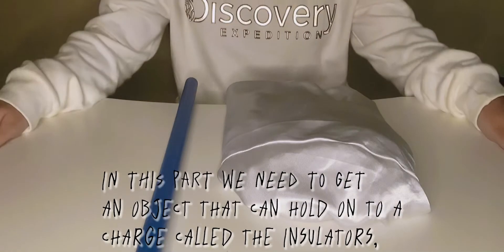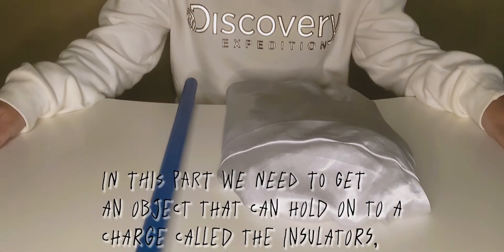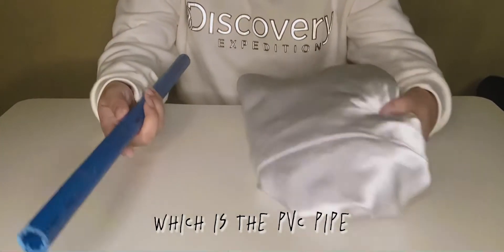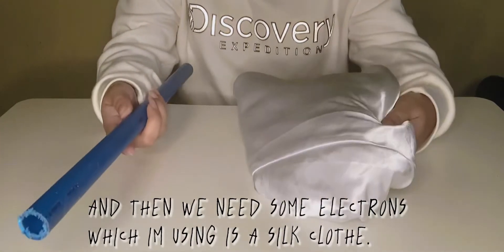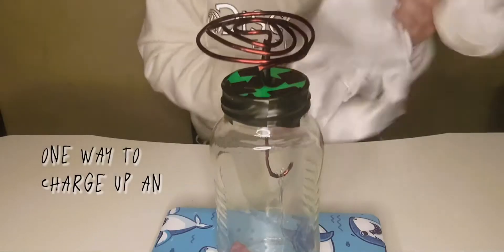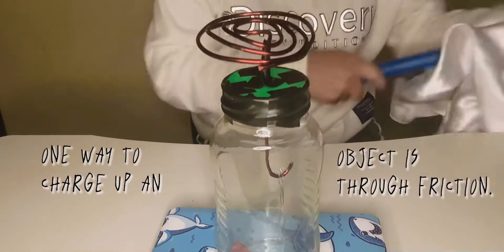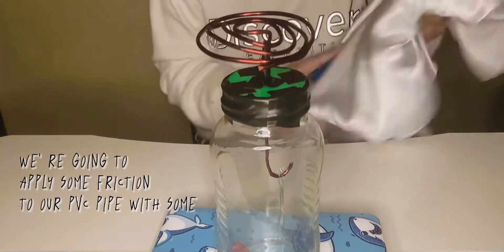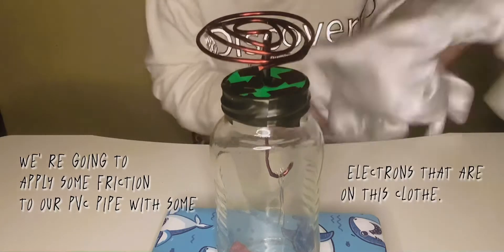In this part, we need to get an object that can hold onto a charge called the insulators, which is the PVC pipe. And then, we need some electrons, which I'm using as a silk cloth. One way to charge up an object is through friction. We're going to apply some friction to our PVC pipe with some electrons that are on this cloth.